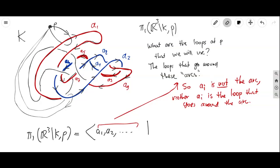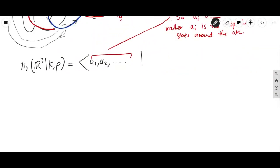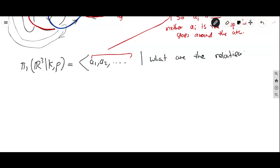So those are the generators for the fundamental group. But what about the relations? In combinatorial group theory, we describe a group through its generators and the relations those generators satisfy. We have described the generators; now we're going to describe the relations.